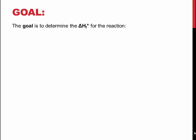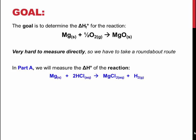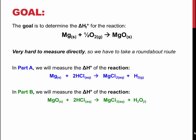The reaction we are looking at in this experiment is the combination of solid magnesium with oxygen gas to form solid magnesium oxide. We are lacking the equipment to directly measure the enthalpy change for this process, so an indirect method will be used. Enthalpy is a state function, so it is independent of the steps used to get from reactants to products, as long as they begin and end at standard state conditions. This allows us to use a series of reactions to find the overall enthalpy change of formation of magnesium oxide.